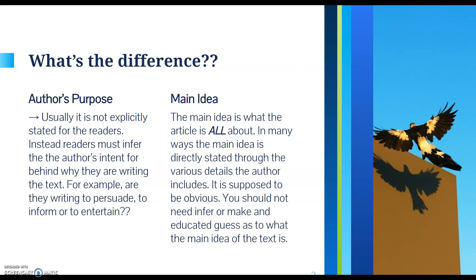The main idea is what the article is all about. This is more black and white — it's stated directly to you. In many ways, the main idea is directly stated through the various details the author includes. It is supposed to be obvious; you should not need to infer or make an educated guess as to what the main idea of the text is. They are two different things, but they do work hand in hand, and we'll see that shortly as I go over some examples.